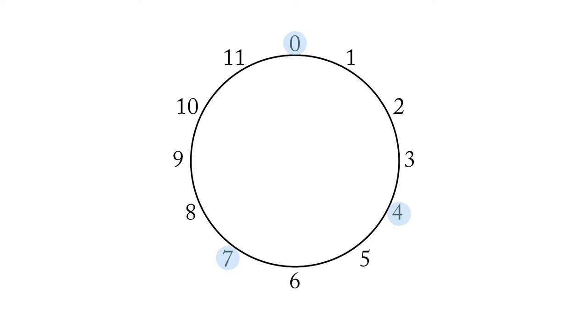Next, we're going to look at the interval class for each pair of integers. Remember, the interval class is the shortest distance between two pitch classes on the clock face. So 0 to 4 is interval class 4, 0 to 7 is interval class 5, finally 4 to 7 is interval class 3.